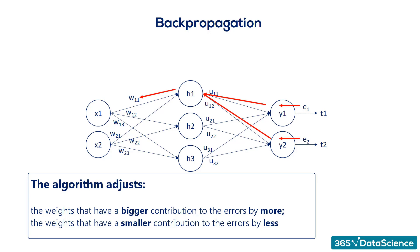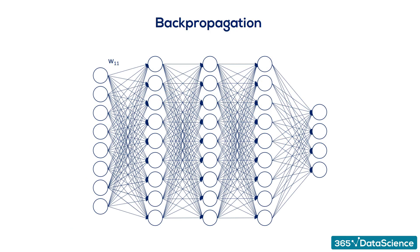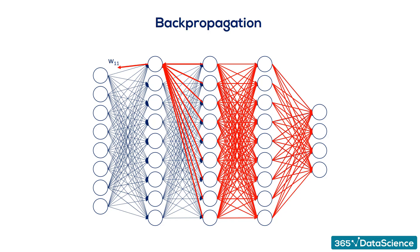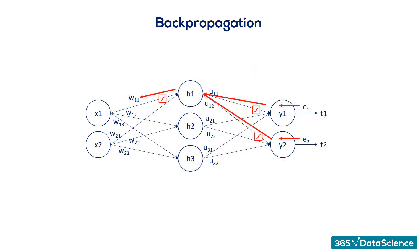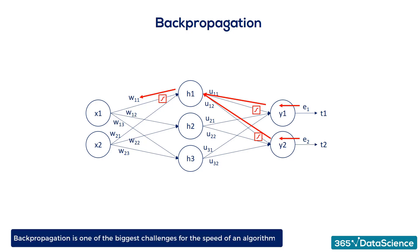A big problem arises when we also consider the activation functions — they introduce additional complexity to this process. Linear contributions are easy, but nonlinear ones are tougher. Imagine backpropagating in our introductory net: once you understand it, it seems very simple, but while pictorially straightforward, mathematically it is rough, to say the least. That is why backpropagation is one of the biggest challenges for the speed of an algorithm.